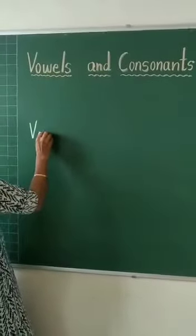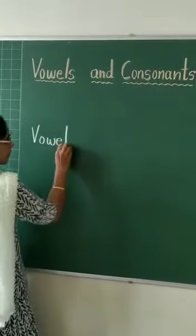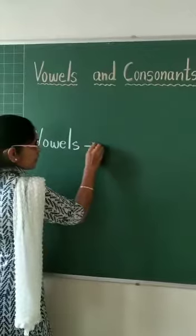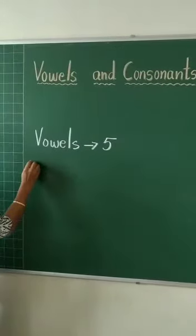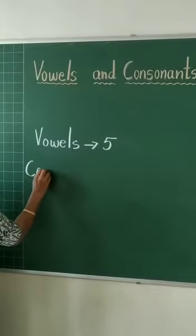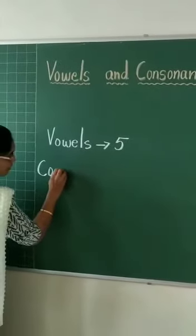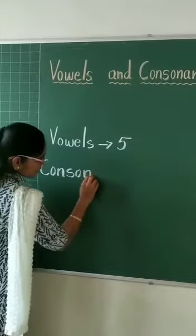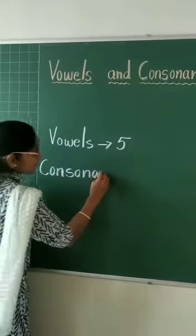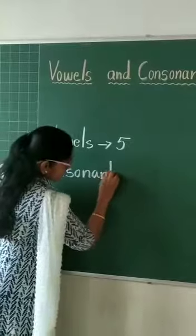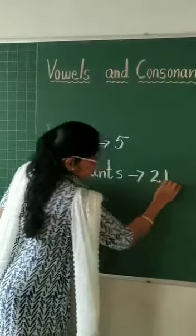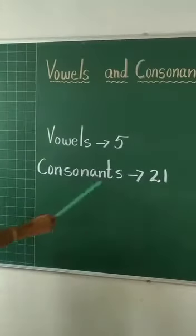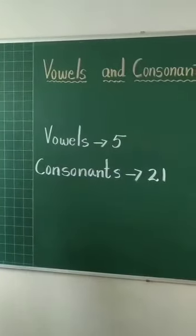Children, there are 5 vowels. Vowels are 5. The remaining are consonants. Consonants are 21.